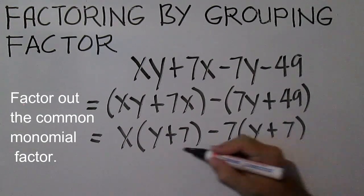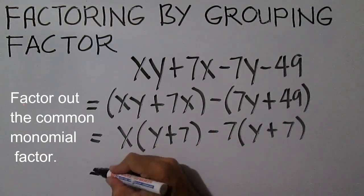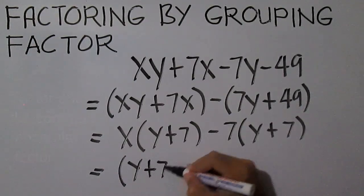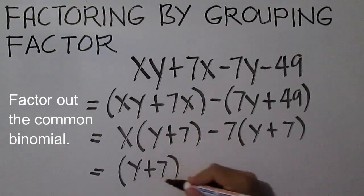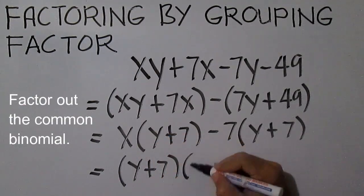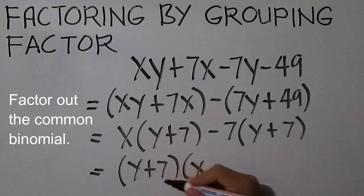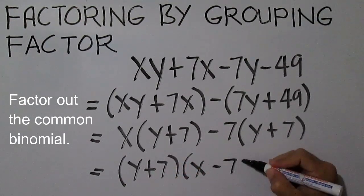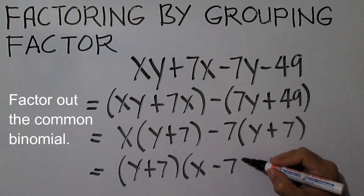Note that Y plus 7 is common. Factor out Y plus 7, then divide each term by the common binomial. The other factor is X minus 7. The factors are Y plus 7 and X minus 7.